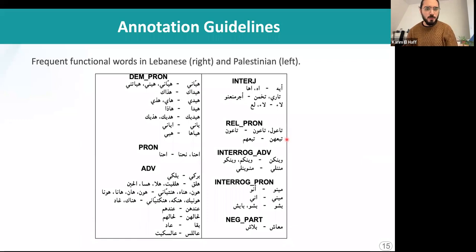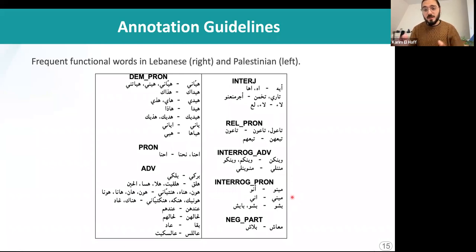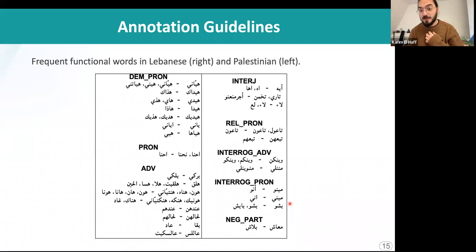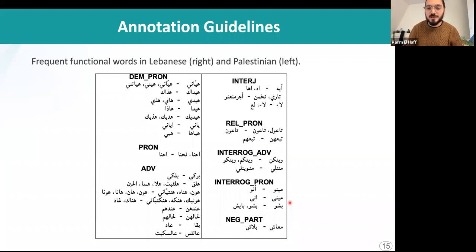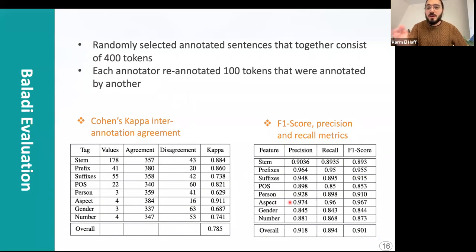Then we have the frequent functional words in Lebanese as opposed to some frequent functional words in Palestinian. Mostly they are identical, but we explored and detected some differences, mainly due to regionalisms that we can see in this table. For example, Lebanese people would say 'eh' for yes, while Palestinians would say 'ah'. Such examples are limited but pretty noticeable because of regionalisms in any dialectal continuum. I will now pass the microphone to my colleague Dr. Jarrar.